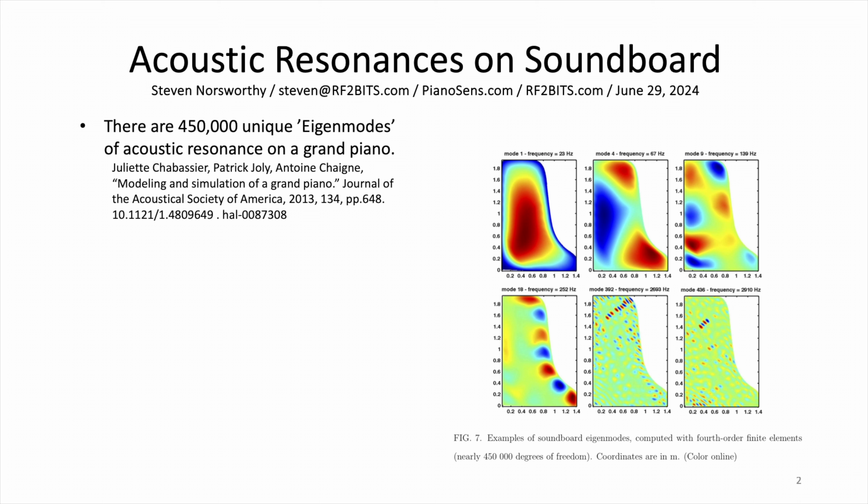From the Journal of the Acoustical Society paper called 'Modeling and Simulation of a Grand Piano' from 2013, the authors discovered that there are 450,000 unique eigenmodes of acoustic resonance on a grand piano. Every one of these colors you see on these pictures are the hot and cold spots — the red being the hottest, the blue being the coldest — of the resonances at that particular frequency being displayed. You can see that the low frequency has one hot spot right in the middle, and when you get up to the higher frequencies there are thousands of little hot spots all over the piano.